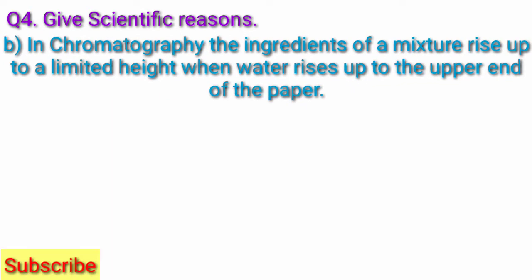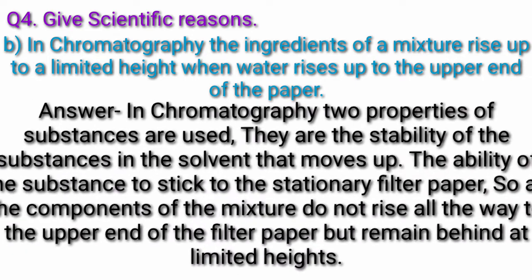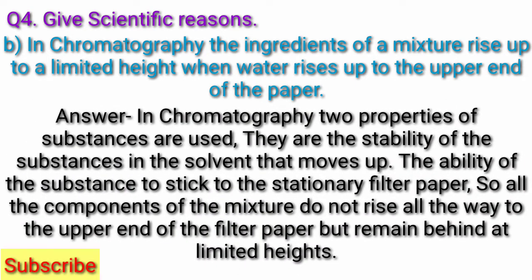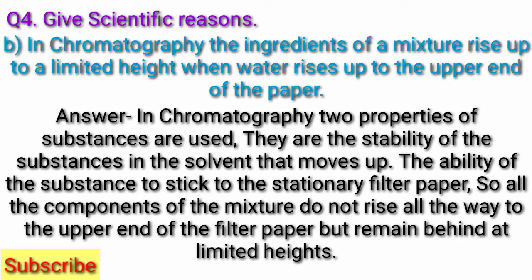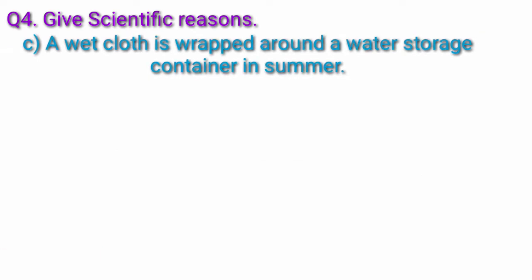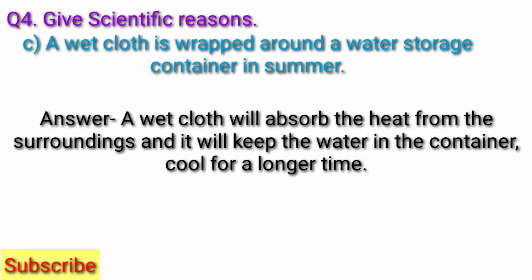Question B: In chromatography, the ingredients of a mixture rise up to a limited height when water rises up to the upper end of the paper. Answer. In chromatography, two properties of substances are used: first, the solubility of the substances in the solvent that moves up; second, the ability of the substance to stick to the stationary filter paper. So all the components of the mixture do not rise all the way to the upper end of the filter paper, but remain behind at limited heights. Question C: A wet cloth is wrapped around a water storage container in summer. Answer. A wet cloth will absorb the heat from the surroundings and it will keep the water in the container cool for a longer time.